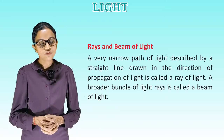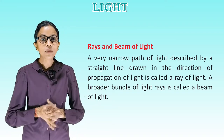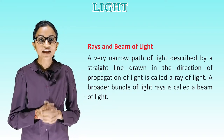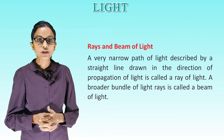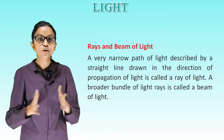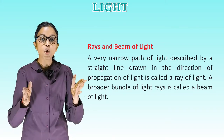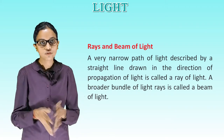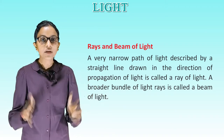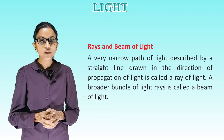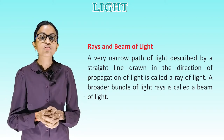Rays and beam of light. A very narrow path of light described by a straight line drawn in the direction of propagation of light is called a ray of light. A broader bundle of light rays is called a beam of light.